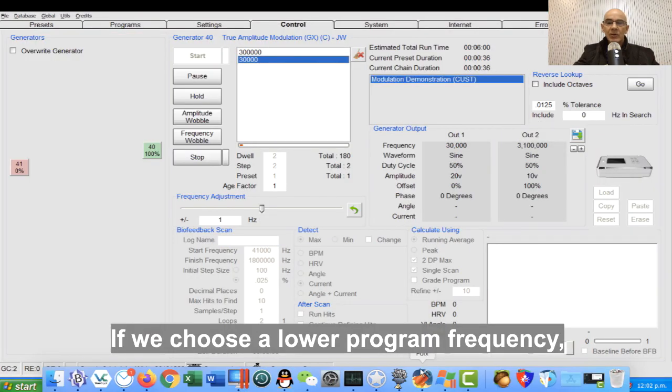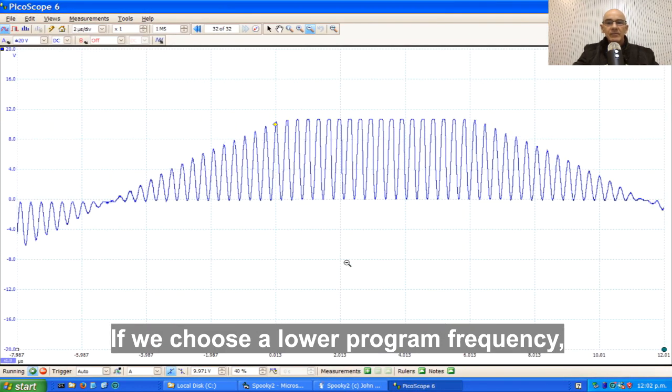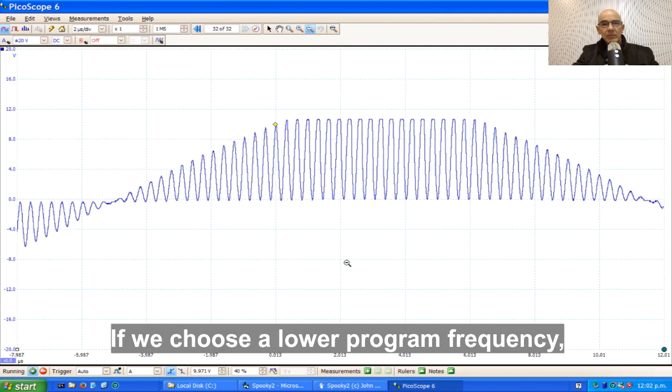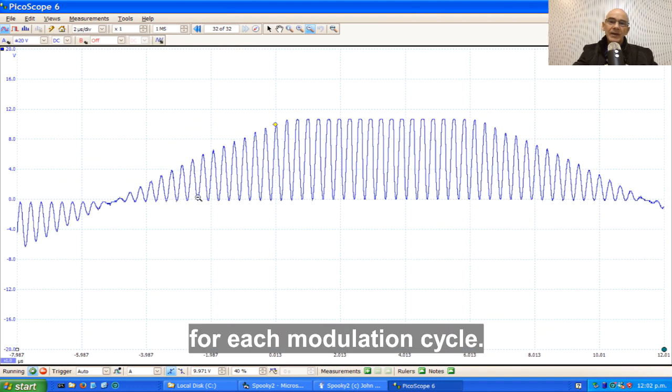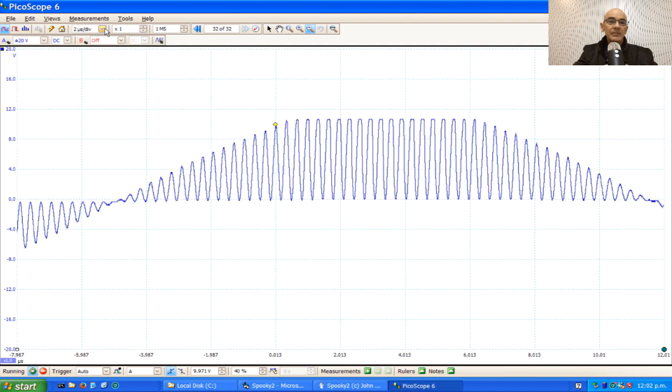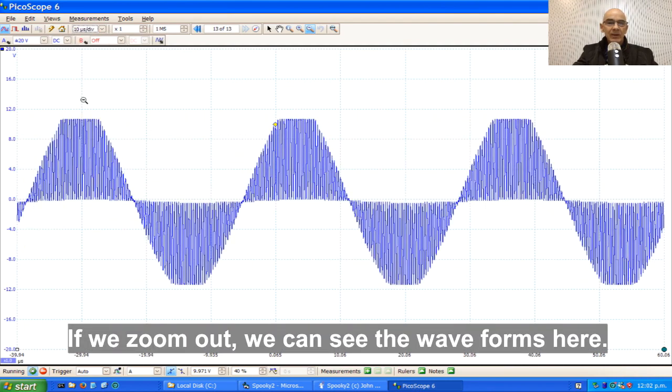If you choose a lower program frequency, then you can see there's more wave cycles for each modulation cycle. If we zoom out, we can see the waveforms here.